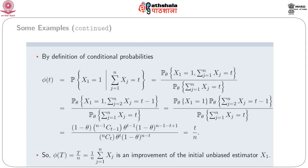So φ(T) = T/n = (1/n)Σⱼ₌₁ⁿ xⱼ is an improvement of the initial unbiased estimator x₁.